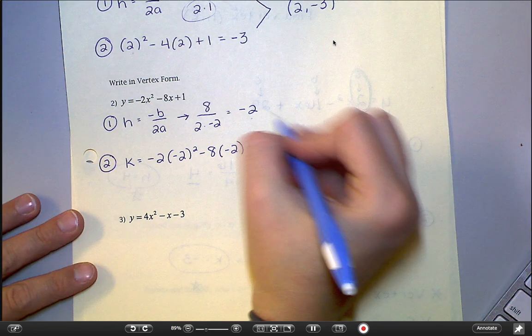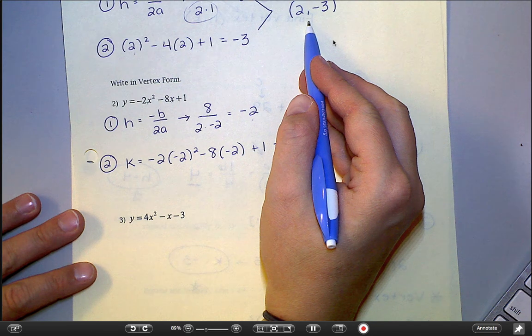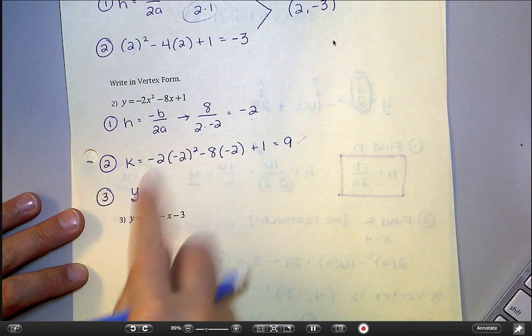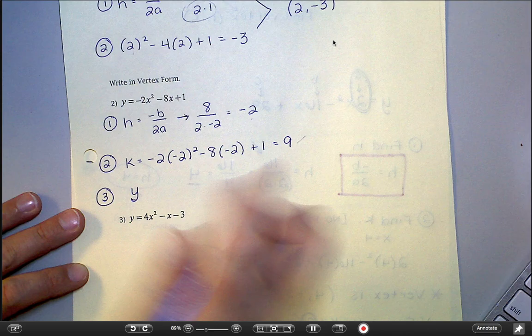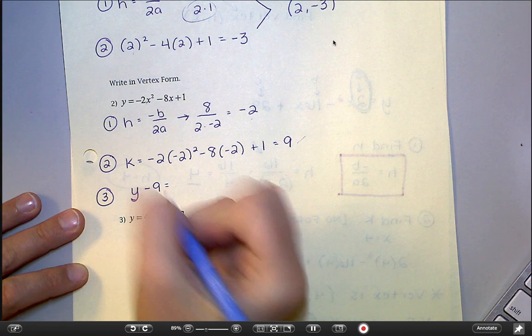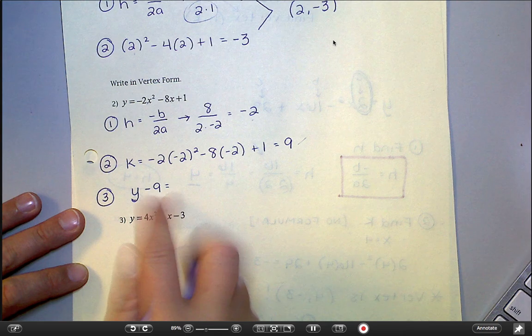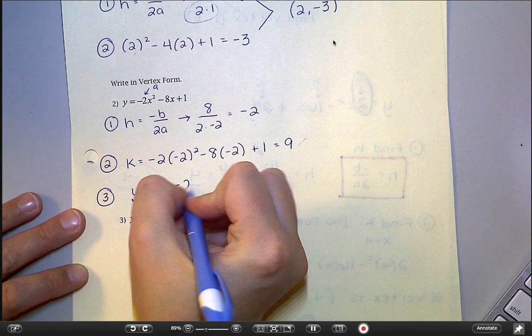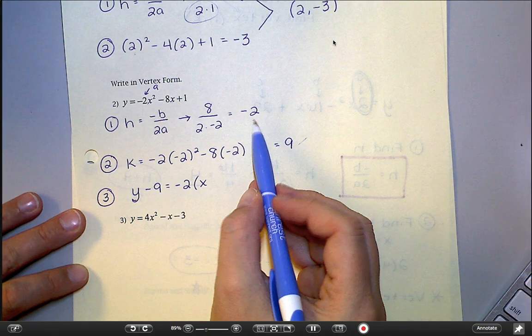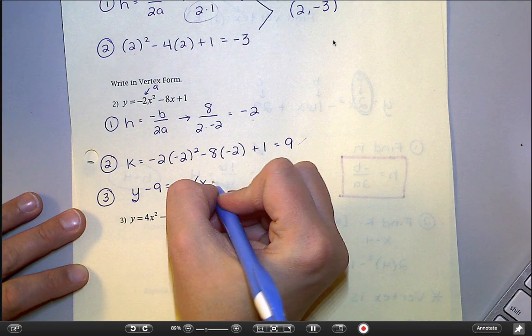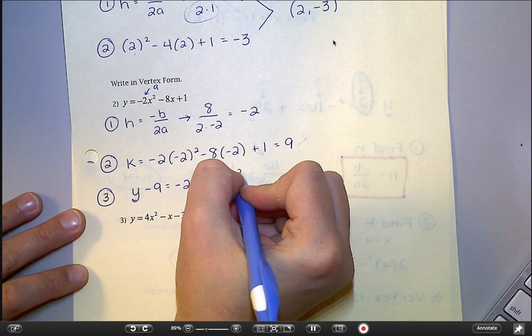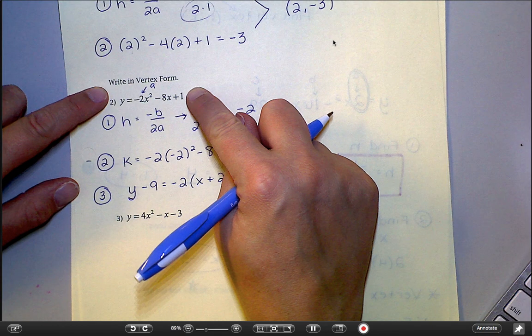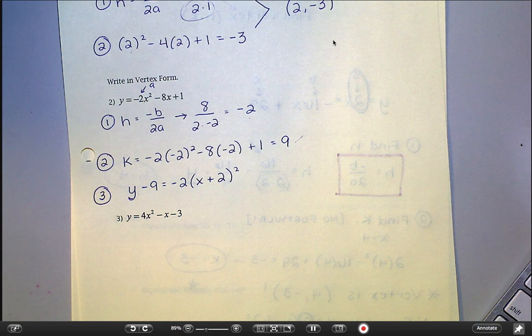So I could pull these together and write my vertex just like I did up there in that last example. But in this one, I do have one more step, and that's putting it in vertex form. So I'm going to go y minus k, so minus 9, equals, remember my next thing would be a, and a is right here. So a is negative 2, and then x minus h, well, minus a negative 2 would end up looking like a plus 2 squared. And so this is equivalent to this, right? If I were to graph them, they'd be exactly the same.